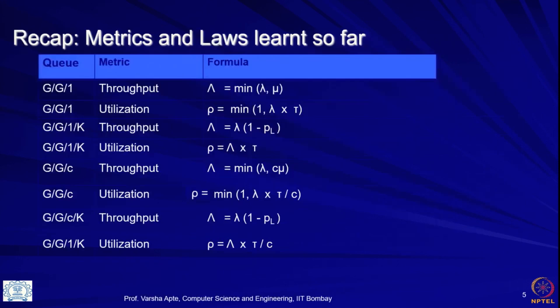What we did last time was we actually derived some metrics like throughputs and utilizations to some extent. For GG1 we had all of these derivations — again this is just given for your reference, you can look at the slides.